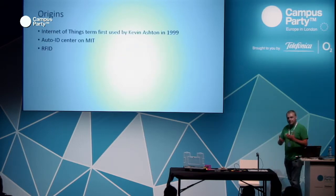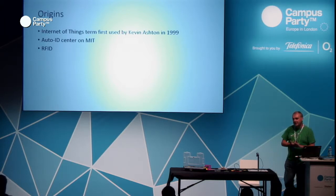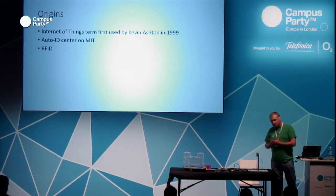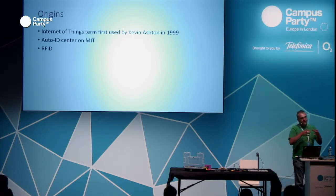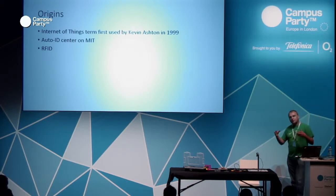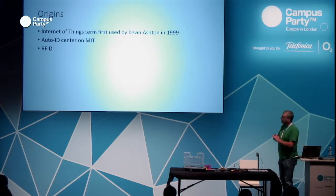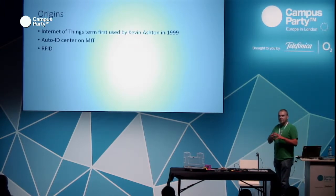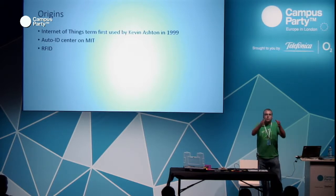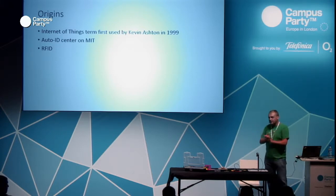The origins of the term Internet of Things are from 1999, used by Kevin Ashton at MIT. He showed a concept in his thesis about connecting or putting unique identification on any object so you can track the position and know what happened with that object. This AutoID system used RFID and was heavily used in stores to track inventory — every box had an RFID tag.